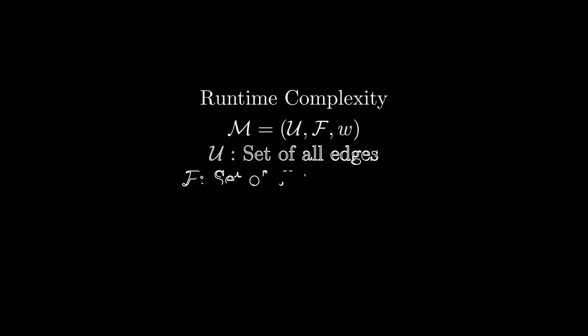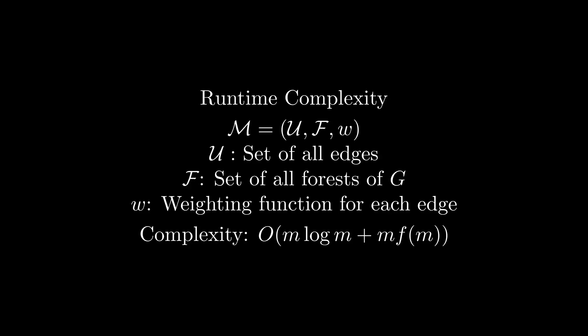With this in mind, we can now calculate the complexity of Kruskal's algorithm. Assume that the graph has n vertices and m edges. Using the matroid formulation of the problem established earlier, we have that the complexity is O(m log m + m × f(m)). Since checking membership in F simply involves using the find and union operations, we have that the complexity is simply O(m log m + m log n). And since m = O(n²) in the worst case where we have a complete graph, we have that this simplifies to O(m log n).